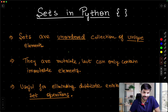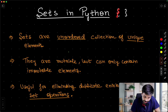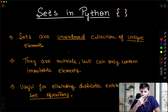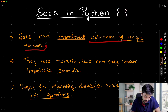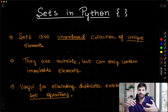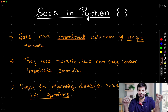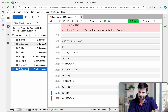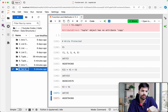Let us start with sets in Python. Sets are an unordered collection of unique elements. Duplicates are not allowed. Sets are actually something which we have already studied — normally in class 11th we are introduced to set theory. Let me just refresh that a little bit.